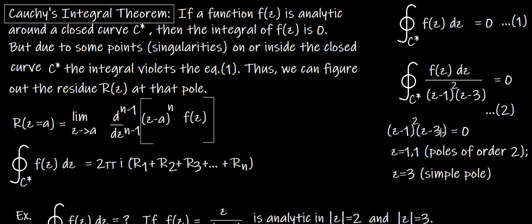Singularities of f(z) arise in expressions like f(z) = numerator / [(z−1)² · (z−3)]. Equating the denominator to zero gives z=1 (a pole of order 2, appearing twice) and z=3 (a simple pole). A singularity occurs because the function cannot have a zero denominator.